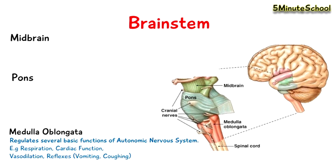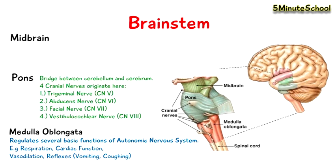The pons is this region here, and it's like a bridge between the cerebellum and the cerebrum. The pons is in fact where four cranial nerves originate: the trigeminal nerve, the abducens nerve, the facial nerve, and the vestibulocochlear nerve.